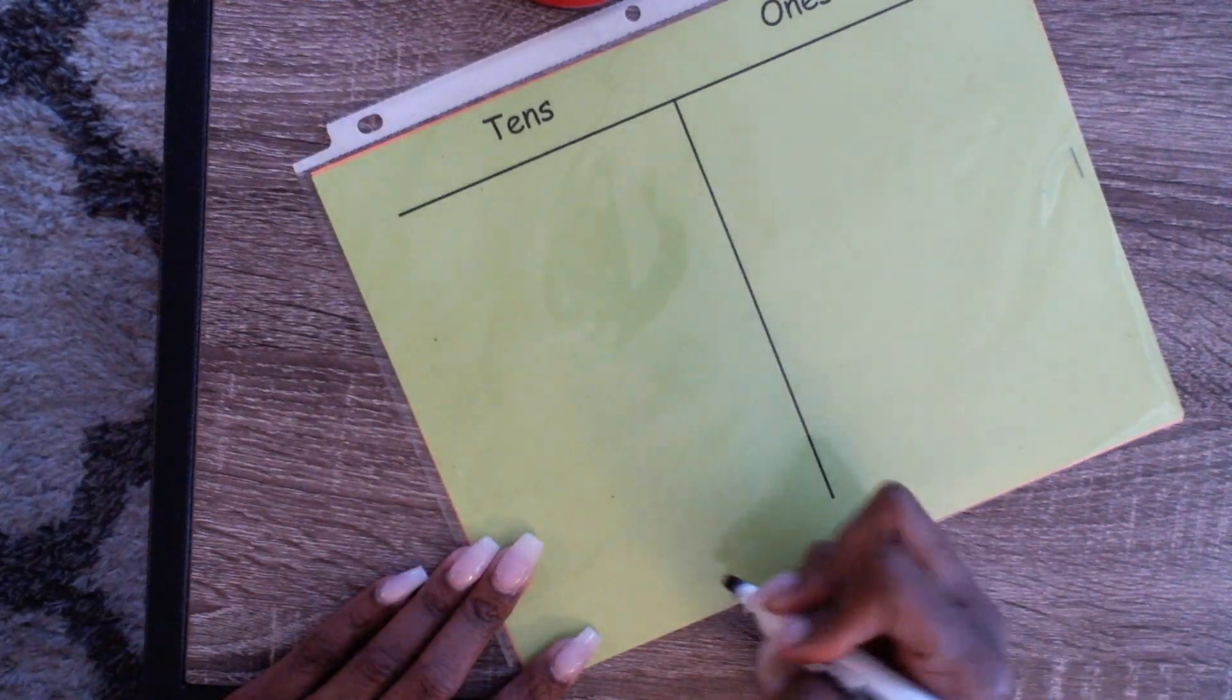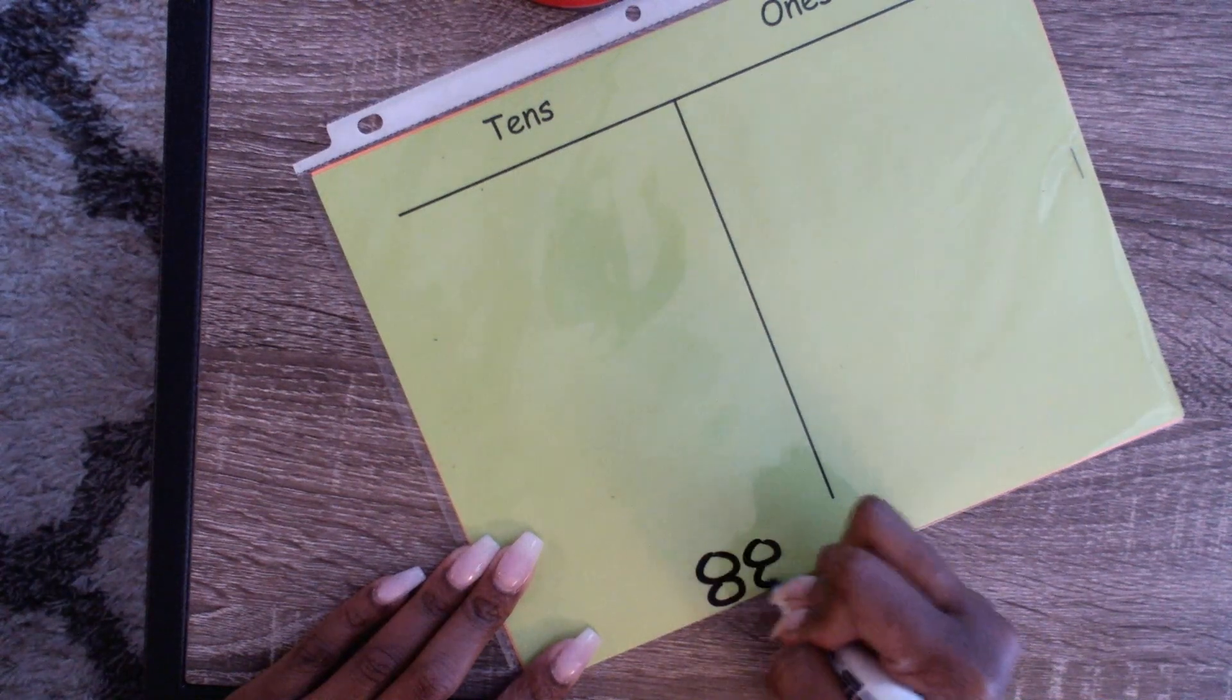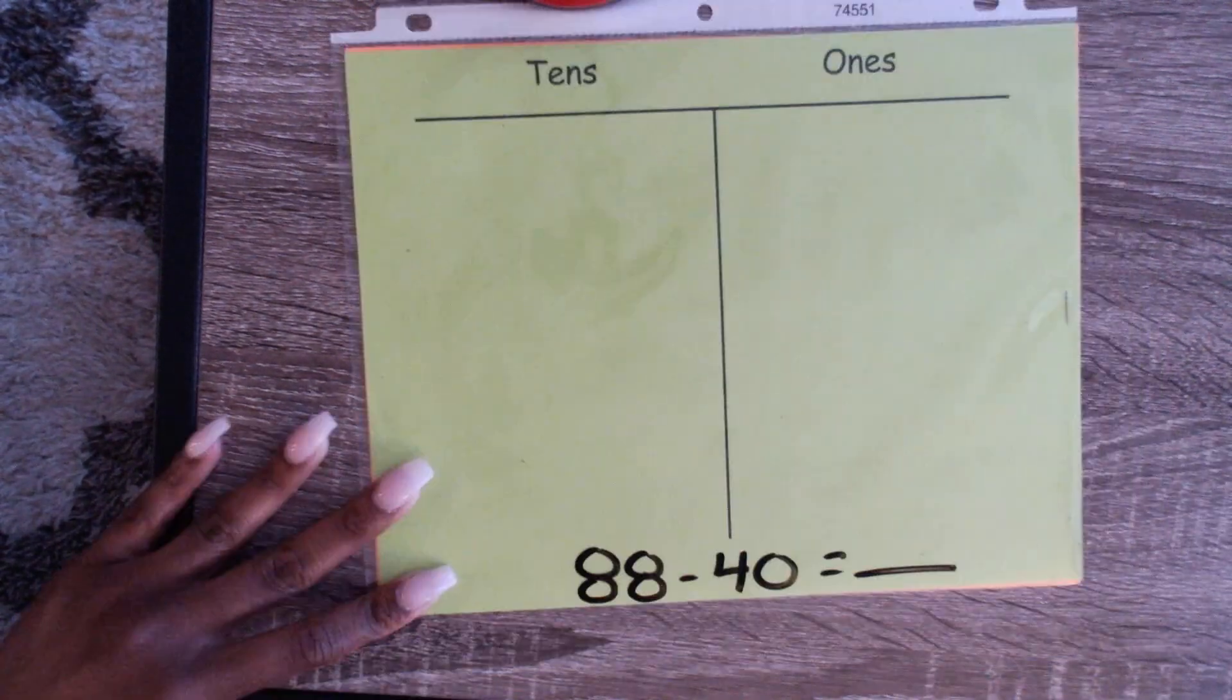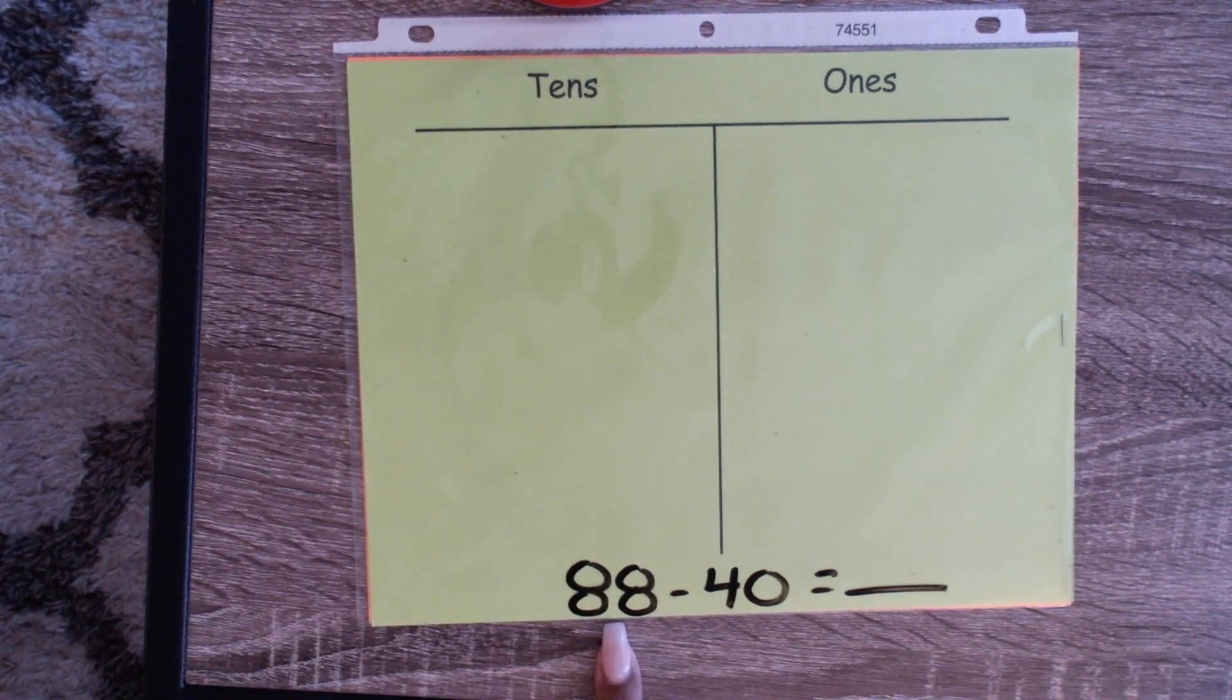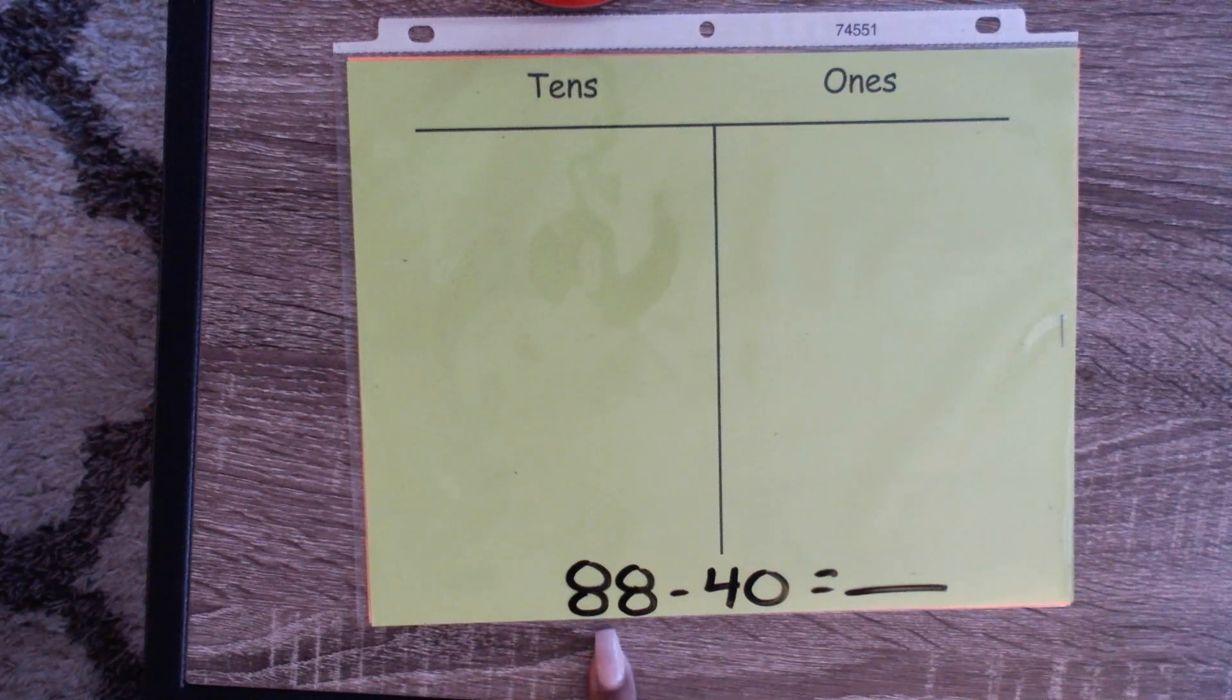Our first equation is going to be a tricky one: 88 minus 40 equals blank. Now we're going to take away multiples of 10. The first thing we want to do is always build our bigger number. Our bigger number is 88.